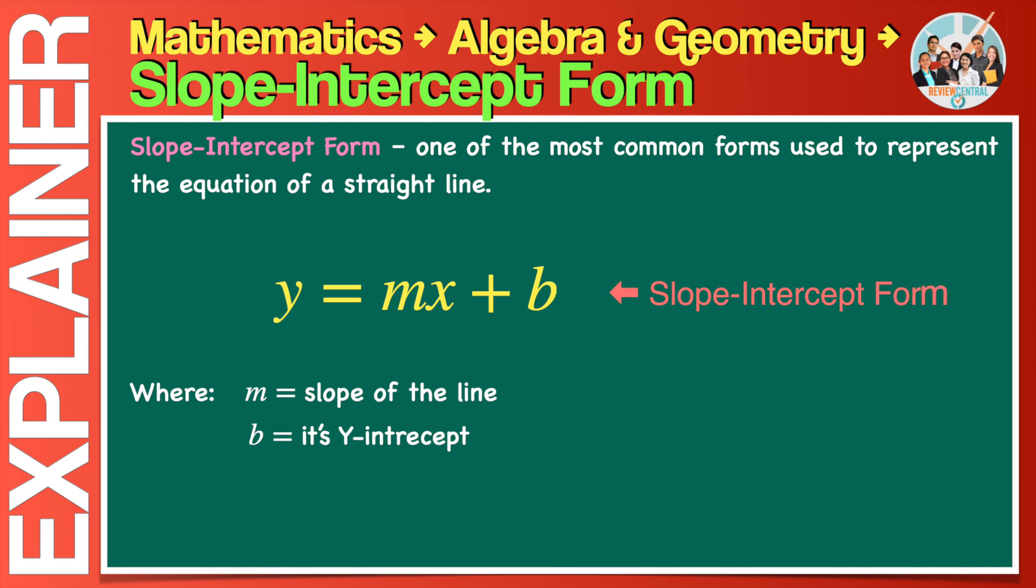It is called the slope-intercept because the two numbers in the formula or equation, m and b, represent the slope and the y-intercept of the line respectively. Either way, the slope of a line is a measure of its steepness. The y-intercept is the y-coordinate of the point where the line intersects the y-axis. We will cover the topics of slope and intercepts in separate explainer videos so we'll leave them at this for now.